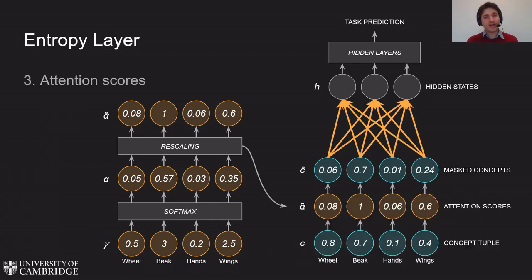And finally, the layer weights the relevance of each concept by the attention scores. Notice how an attention score close to zero would have the effect of pruning the corresponding concept. This way the network would learn automatically how to select relevant concepts and get rid of irrelevant ones.